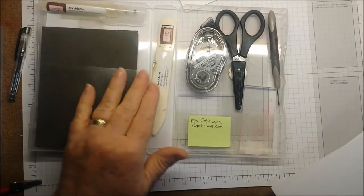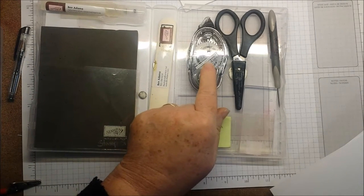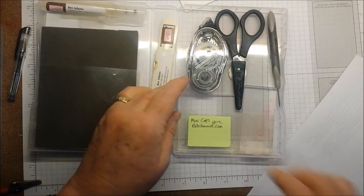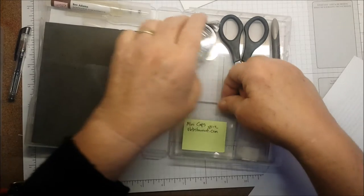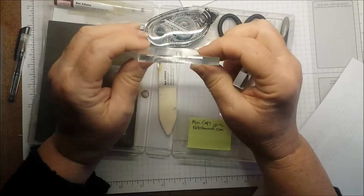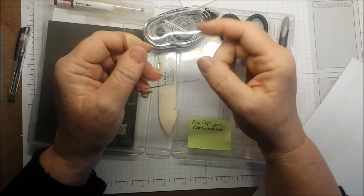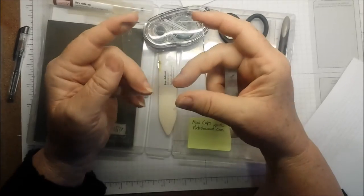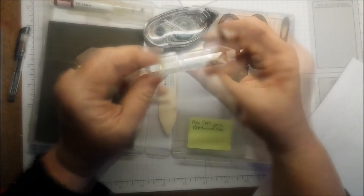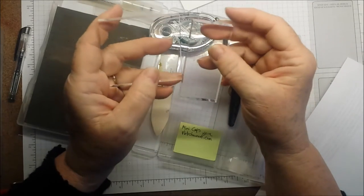You will also need the stamp and pierce mat, a bone folder, snail adhesive, paper snips, a paper piercing tool, and then one of these two blocks. This is the D block that's specially for paper pumpkin. And if you don't subscribe to paper pumpkin, ask your demonstrator to put one of these on the next demonstrator order. This is the block from the watercolor wishes. You're going to use one of these blocks, but not both.